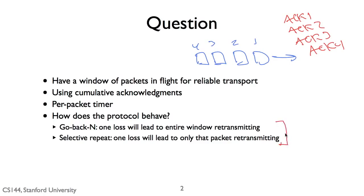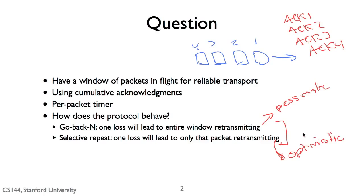There are essentially two strategies you end up seeing emerge from different protocols. The first is Go-Back-N. Go-Back-N is a very pessimistic approach: if a single packet is lost, we're going to retransmit the entire outstanding window of packets. So if the window is of size n and we lose some packet, we go back and retransmit all of them. The second is selective repeat, which is optimistic. Go-Back-N assumes that if one packet is lost, all of them are lost in the window. Selective repeat assumes that if one packet is lost, only that packet was lost. So in selective repeat, if we lose a packet and it's not acknowledged, we'll retransmit that packet and only that packet.